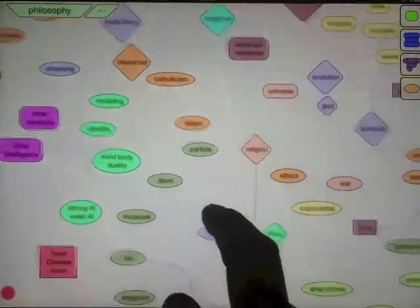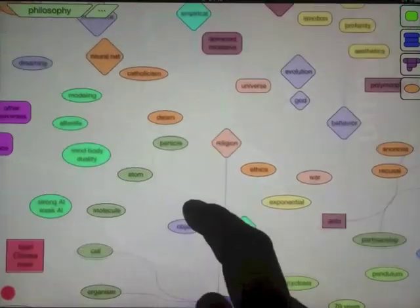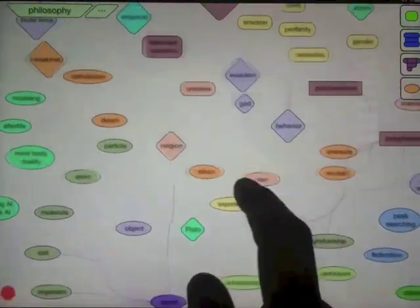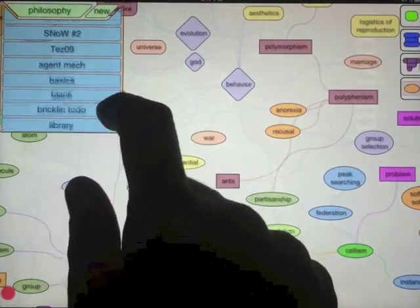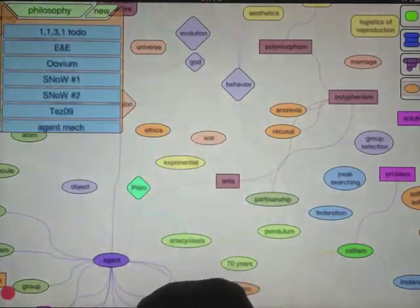As I slide the Ether around, you can see there are a number of controls that hover above it. I call these controls hovers. In the upper left-hand corner is the Ether selection hover. This allows me to create new ethers and to flip between existing ones.